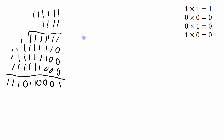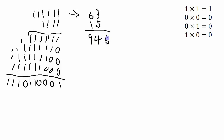To double check, I'll convert into base ten and verify. This value — 111111 — is 63 in base ten. This value — 1111 — is 15 in base ten. Sixty-three times fifteen equals 945. And our result works out to one plus sixteen plus thirty-two plus one twenty-eight plus two fifty-six plus five twelve, which is 512 plus 256 plus 128 plus 32 plus 16 plus 1 — and that also adds up to 945. So it looks like I've done that correctly.